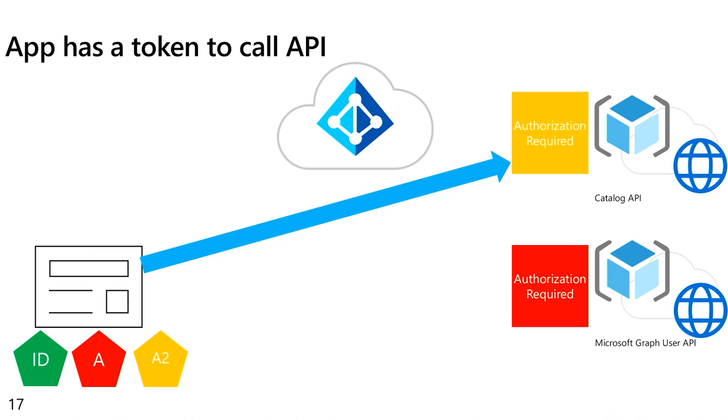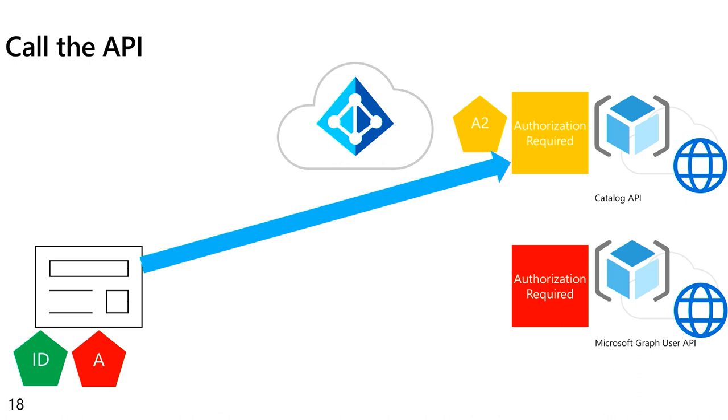This is the access token you pass along to the second API. If the resource, the API, validates the token and everything checks out, it can guarantee you access and return the result. This is basically how modern authentication works. You get an ID token to know who the user is. You get access tokens to call APIs. And every API needs its own access token.